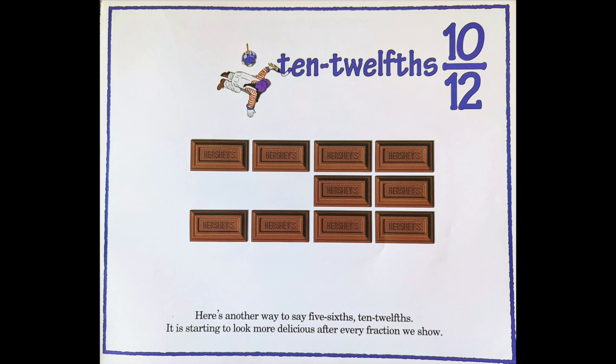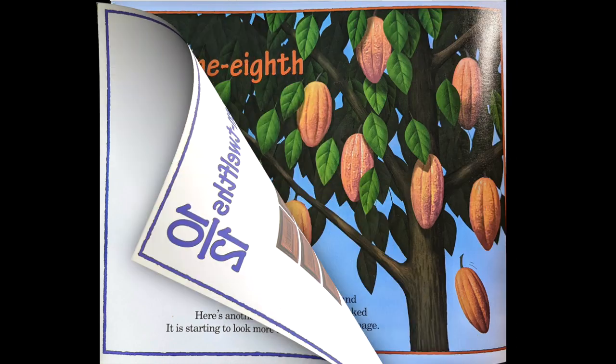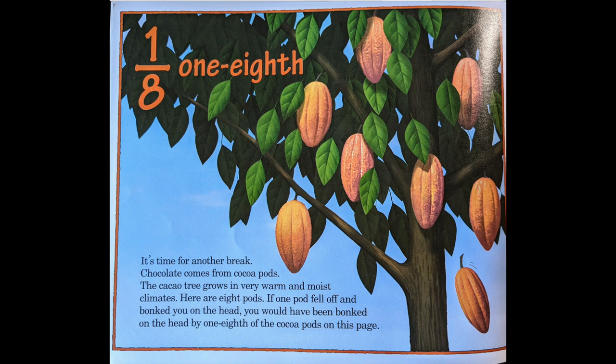One eighth. It's time for another break. Chocolate comes from cocoa pods — the cacao tree grows in very warm and moist climates. Here are eight pods. If one pod fell off and boinked you on the head, you would have been boinked on the head by one eighth of the cocoa pods on this page.